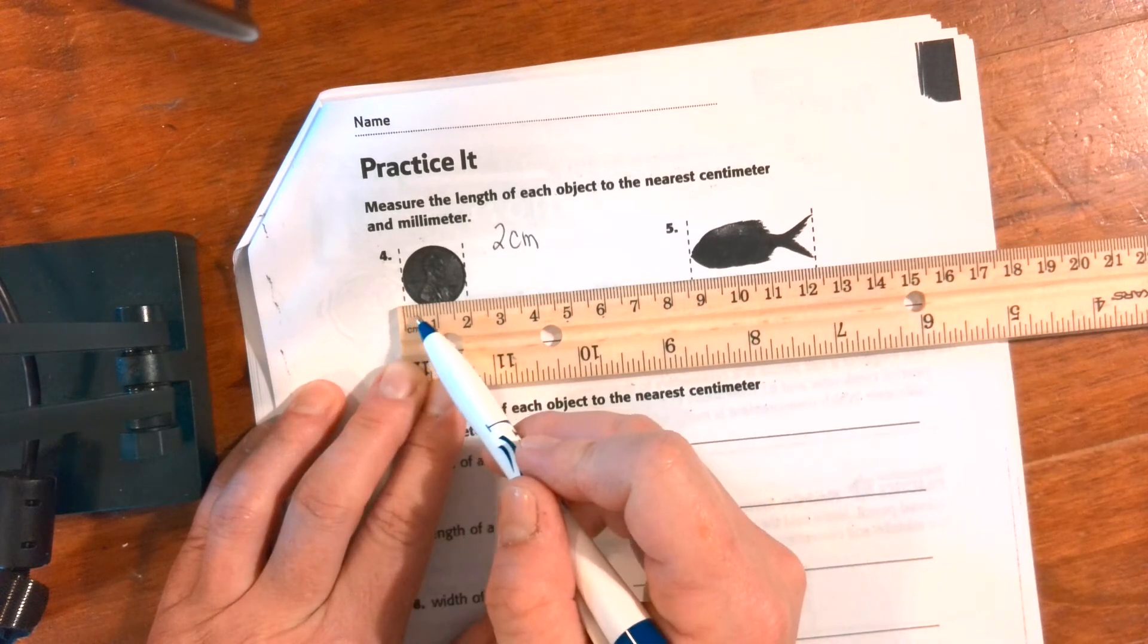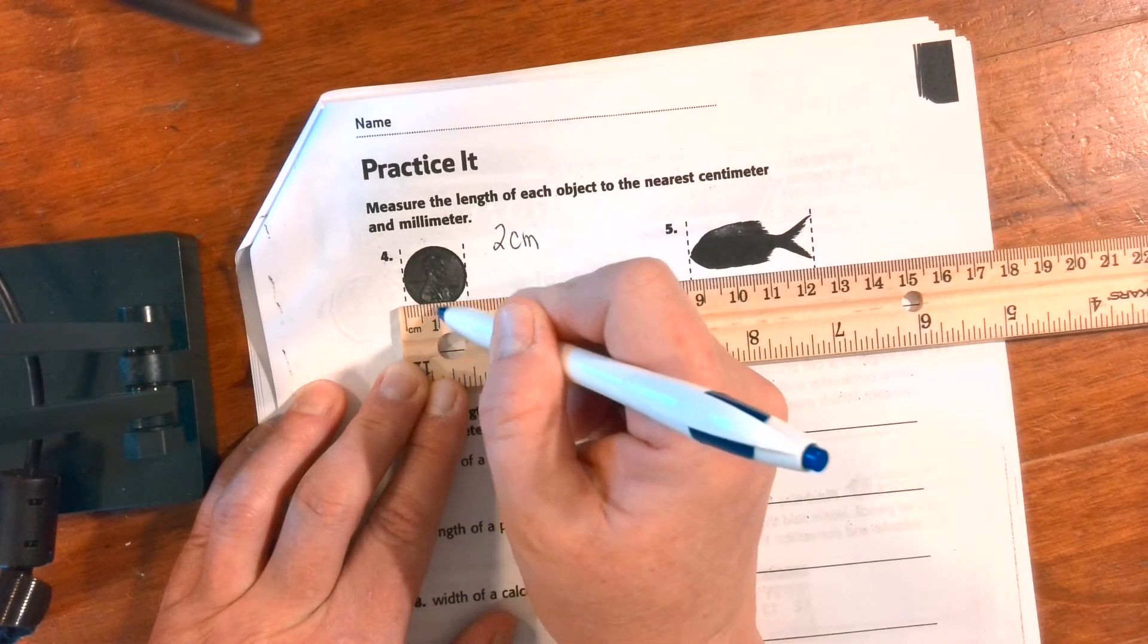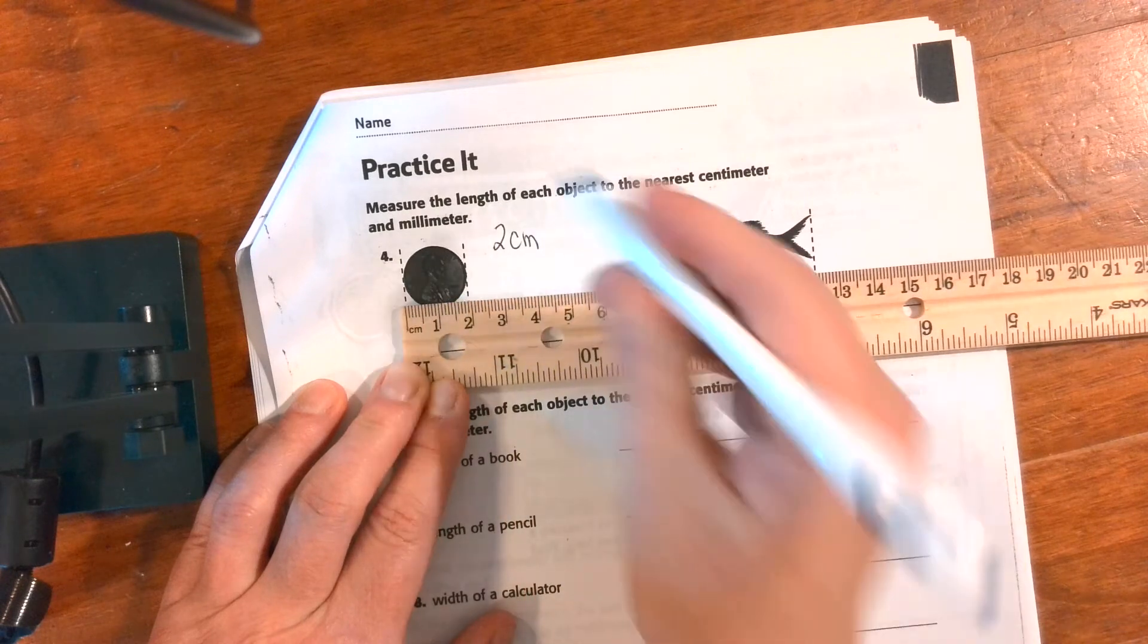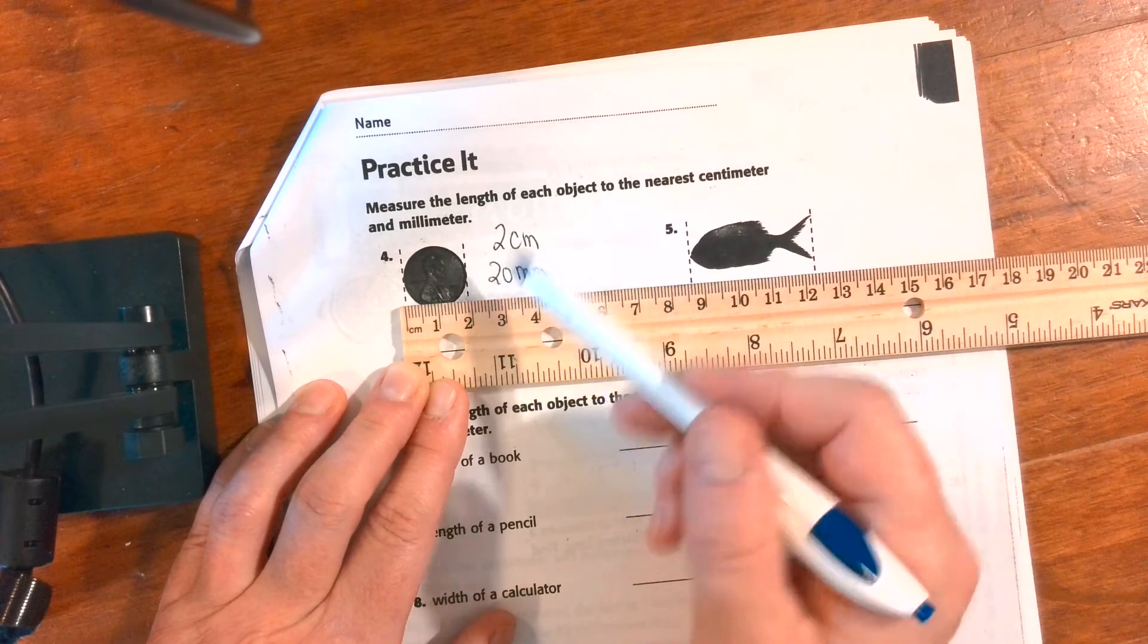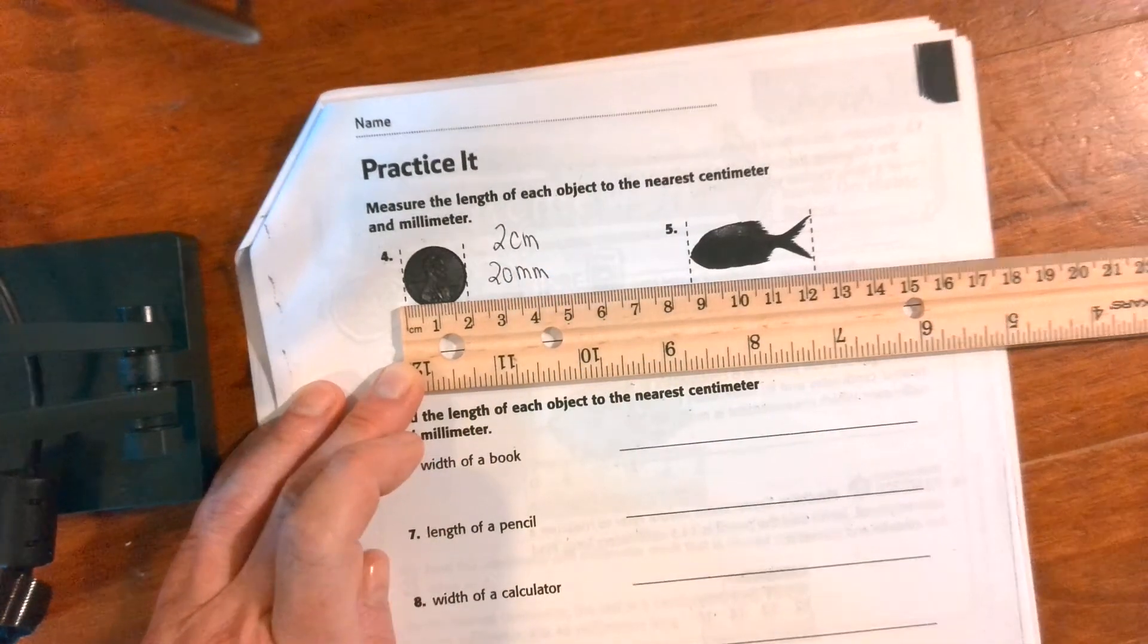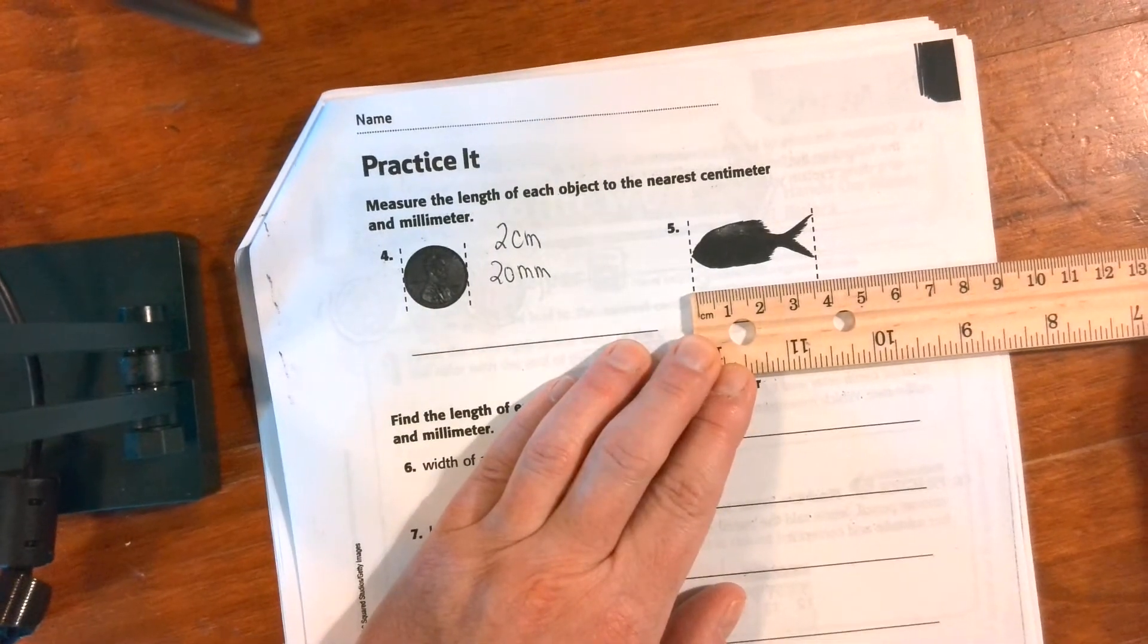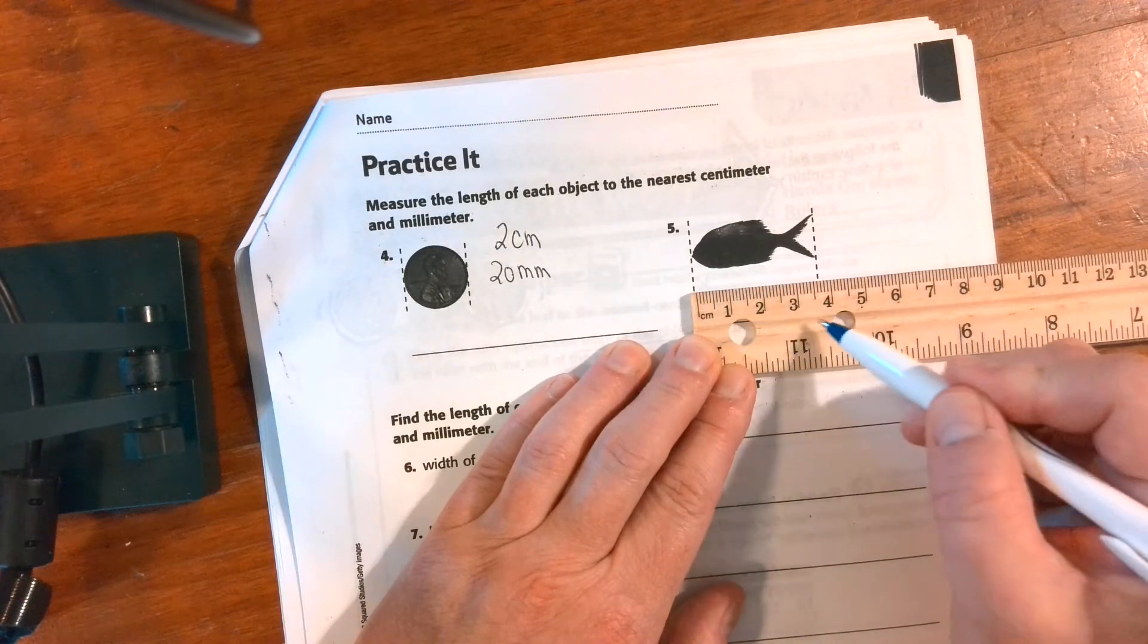I'm not going to count 1, 2, 3, 4, 5 - that would take way too long. So I'm going to remember that there's 10 little lines: 10, 20. Twenty millimeters. Notice that we just multiplied by 10.